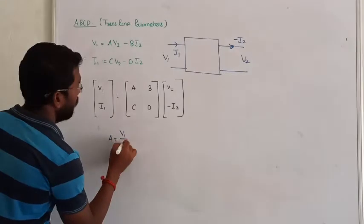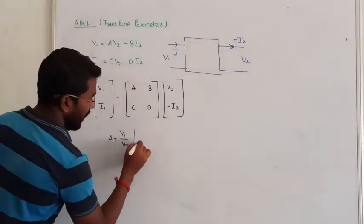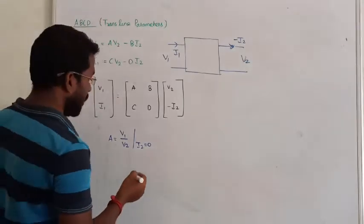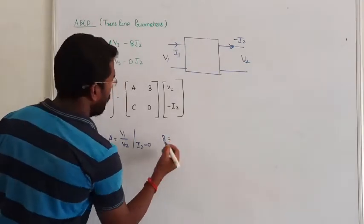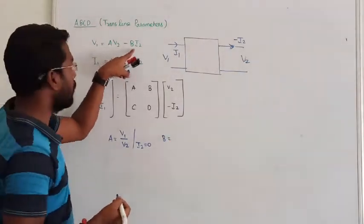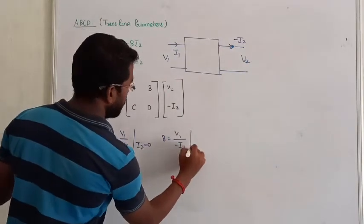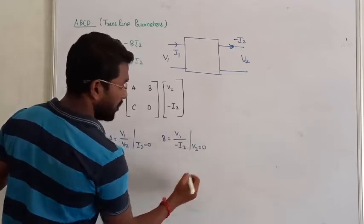If I2 is 0, you will get V1 by V2, various value of I2 is going to be 0. Similarly, when we are calculating the parameter B, if we are calculating the parameter B, B is the value, minus I2 upon, various value of V2 is going to be 0.